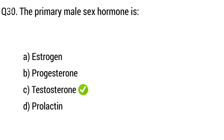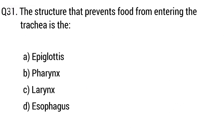Question 31. The structure that prevents food from entering the trachea is? The right answer is option A: Epiglottis.